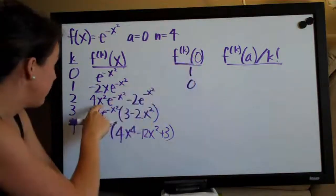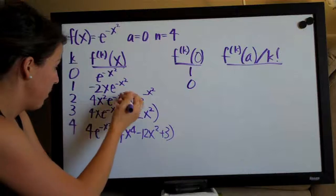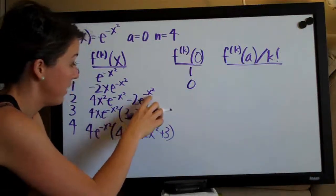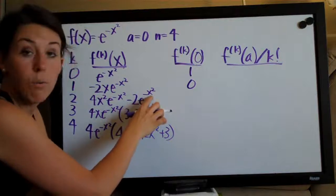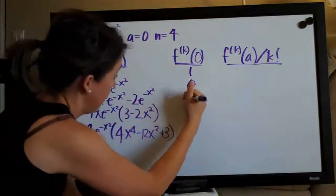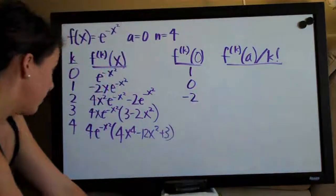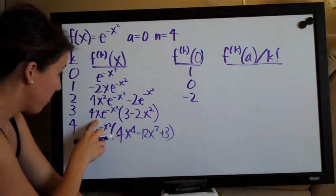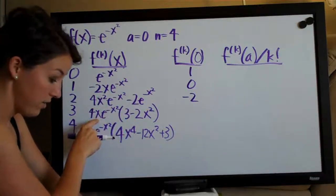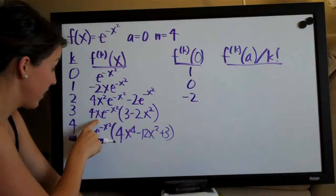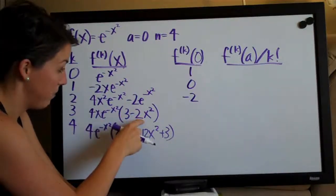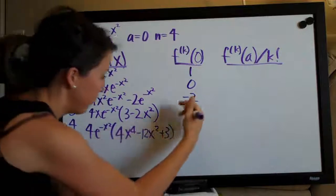And now you can see pretty easily, we're going to bring this zero down into this x squared, which is going to get rid of this whole first term. And then when we put zero in here, we've got e to the zero, which is one. One times negative two, so just negative two. Then we plug zero in here.